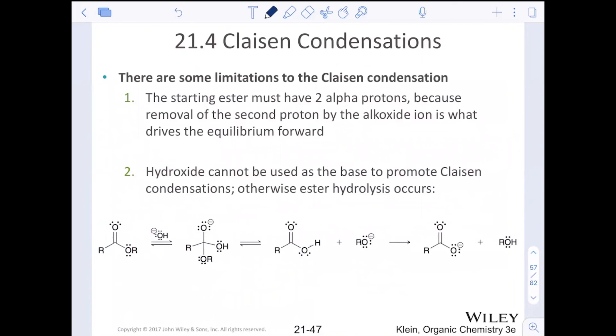Some limitations to Claisen. The starting ester must have two alpha protons because removal of the second proton by the alkoxide ion is what drives the reaction forward. If we did not drive that reaction forward with the last deprotonation step, we wouldn't get the Claisen reaction.